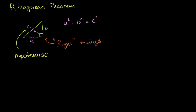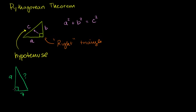Now that we know the Pythagorean Theorem, let's actually use it — because it's one thing to know something, but it's a lot more fun to use it. So let's say I have the following right triangle. This side over here has length 9, this side over here has length 7, and the question is: what is this side over here? We'll call that c.